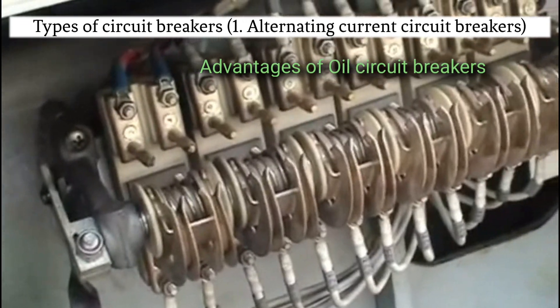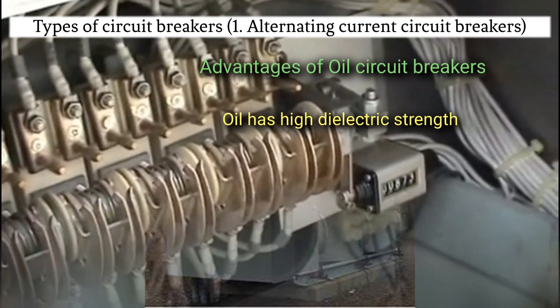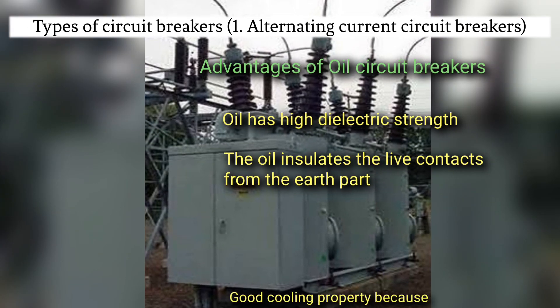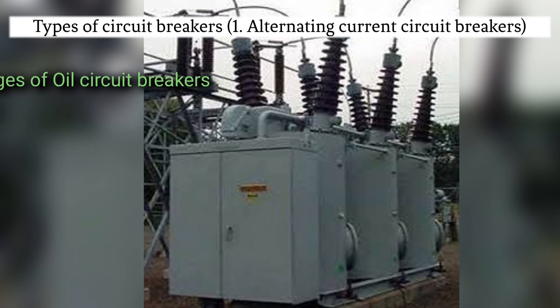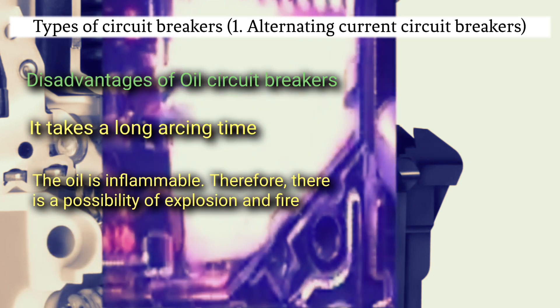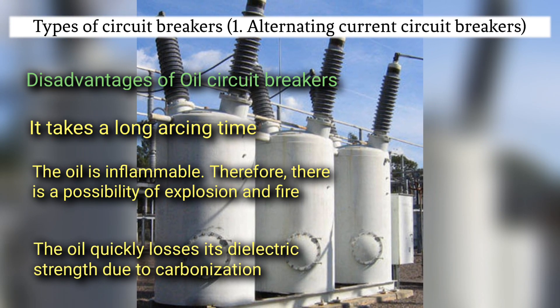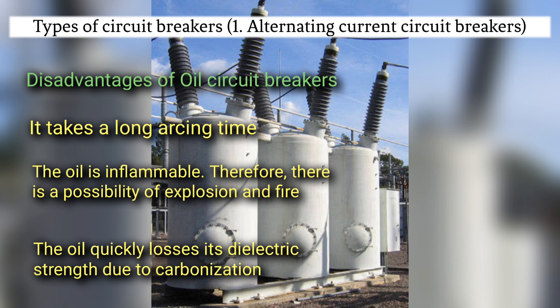Advantages of oil circuit breaker: oil has high dielectric strength; the oil insulates the live contacts from the earth parts; good cooling properties because of the decomposition. Disadvantages of oil circuit breakers: it takes a long arcing time; the oil is inflammable, therefore there is a possibility of explosion and fire; the oil quenching loses its dielectric strength due to carbonization.